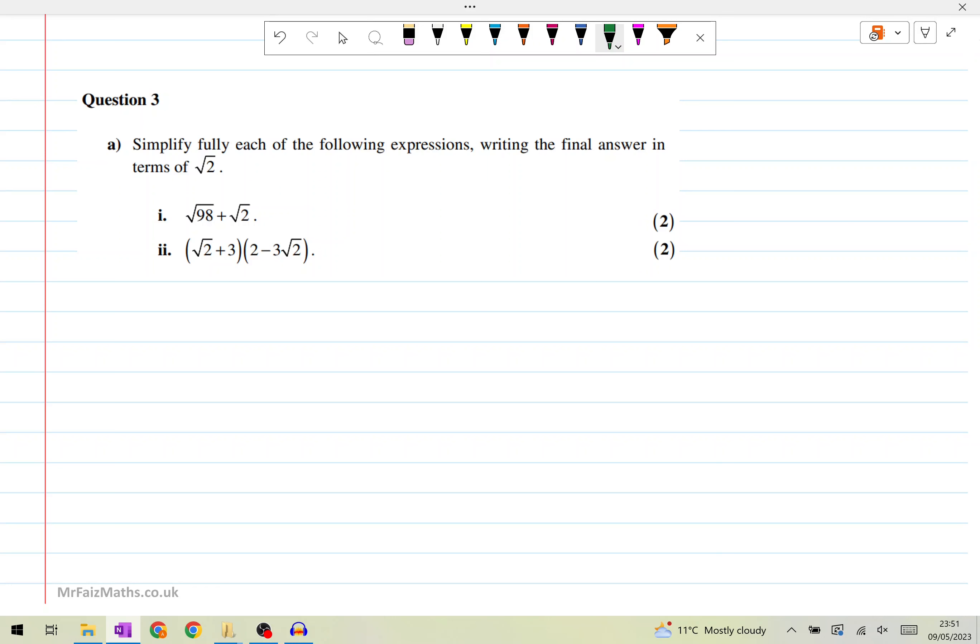So on the first one, square root of 98, we can rewrite that as square root of 49 times the square root of two, and then plus square root of two, which will then simplify to square root of 49 is seven. So this is seven root two plus root two. So the root two on its own, you can think of that as one square root two. So seven root two plus one root two, this gives us eight square root of two.